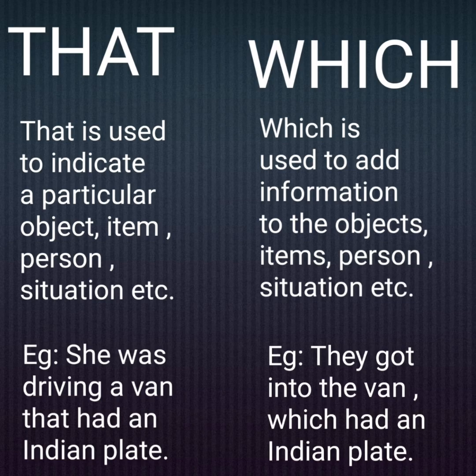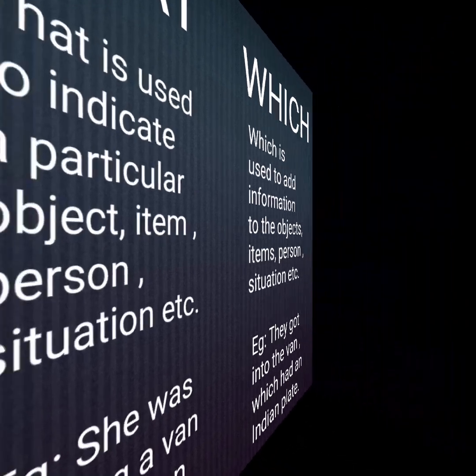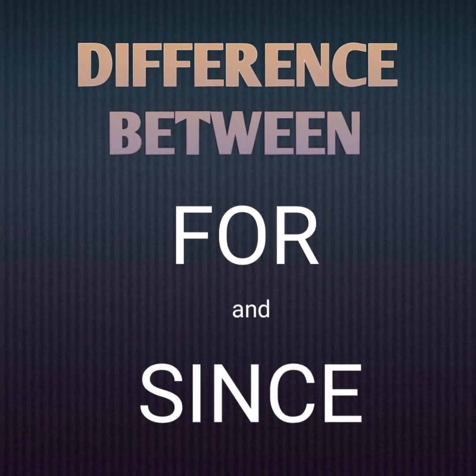For 'that', the example is: 'She was driving a van that had an Indian plate' — here I'm indicating that the van had an Indian plate. For 'which', the example is: 'They got into the van which had an Indian plate' — here we are adding information that the van had an Indian plate.